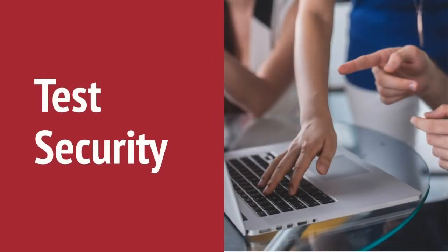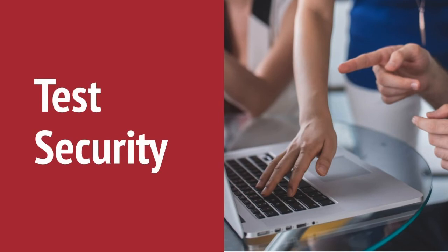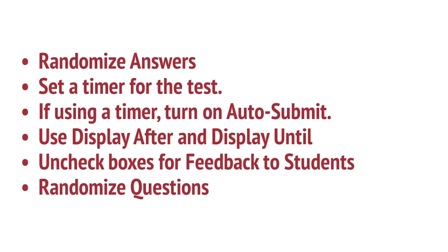Now that we've reviewed all of the test question options and the test options, let's go over which ones provide the best test security. Randomize answers for each test question — there is a Randomized Answers checkbox in question types with multiple options. Set a timer for the test and use auto-submit to automatically save and submit when the time expires. Display After and Display Until control when the test link is available; it doesn't have to be available for the duration of the test. If the test should last from 9am to 10am and your link is also available, students can start the test at 9:59am. Under feedback to students, Score Per Question is checked by default — this will show the test questions and the score a student receives for each question. Uncheck all of the boxes underneath this section to show only the score after an attempt. Check the test option to Randomize Questions to display questions in a random order each time the test is taken.